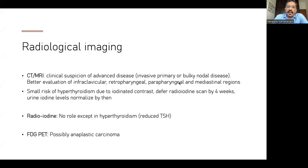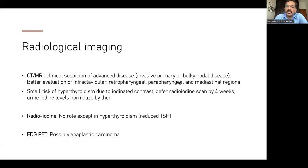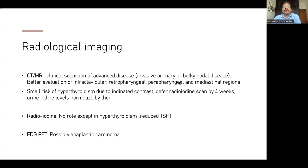If the patient is going to need a radioiodine scan, you can defer it by four to eight weeks and test urine iodine levels to ensure they are normal — the interference from contrast CT four weeks down the line is not likely to be a problem. Cross-sectional imaging helps evaluate the infraclavicular area, retropharyngeal area, parapharyngeal area, and mediastinal regions. If you have a large thyroid gland extending into the mediastinum, it's very important to be prepared — if the patient needs a sternotomy, it should be planned ahead of time with proper counseling.